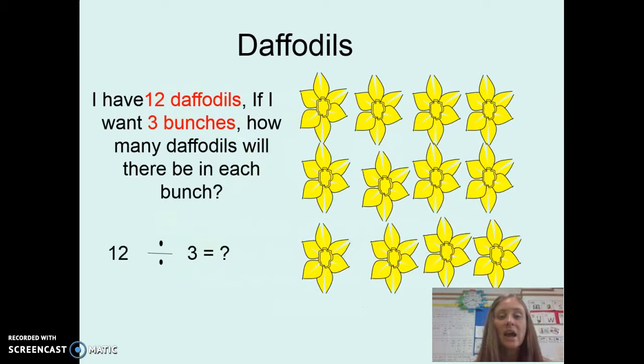If I have 12 daffodils and I want three bunches of the daffodils, how many daffodils will there be in each bunch? For this question we know that we want three bunches, so we know that we want three groups.